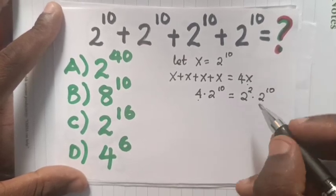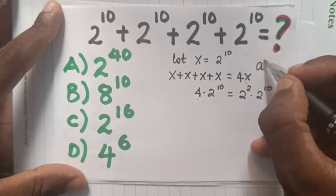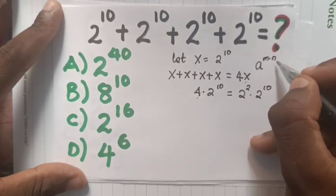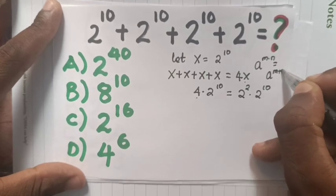It is same base, 2. From the exponential rule, a power m times a power n is equal to a power m plus n.